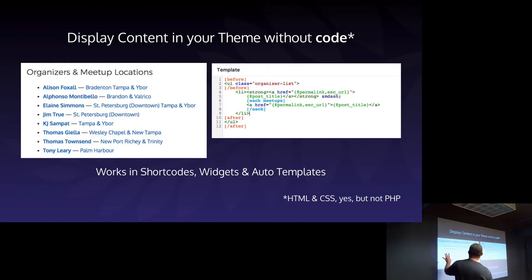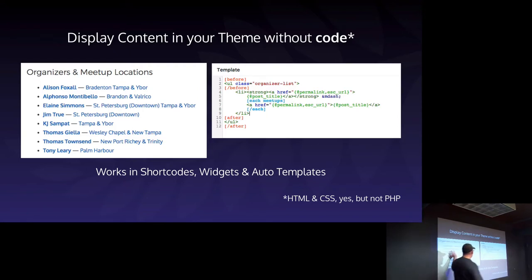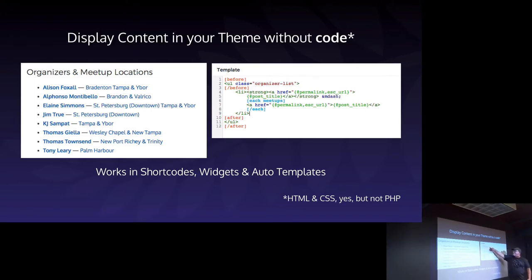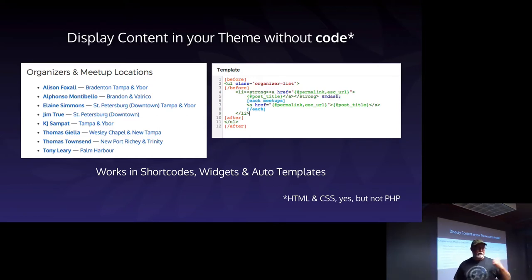This is from our WordPress Tampa Bay website. It lists all of our different organizers and which meetups they're managing. This little section of output comes from a template that is essentially just an unordered list with a list item containing a link, a title, and another link. It's a tiny little bit of markup. This works in shortcodes, widgets, and auto templates.